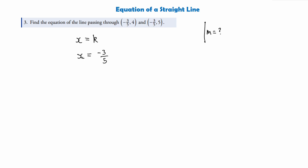The equation of this line is x equals −3/5. Although this doesn't have y in it, this is the equation of the straight line. The y value will always be changing, so we don't know what it is, but the x value will always remain at −3/5.